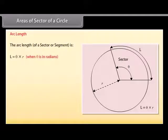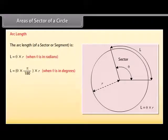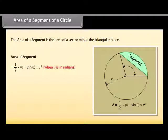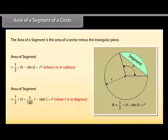Area of segment is the area of a sector minus the triangular piece. Area of segment = ½ × (θ − sin θ) × R² when θ is in radians. Area of segment = ½ × (θ × π/180 − sin θ) × R² when θ is in degrees.